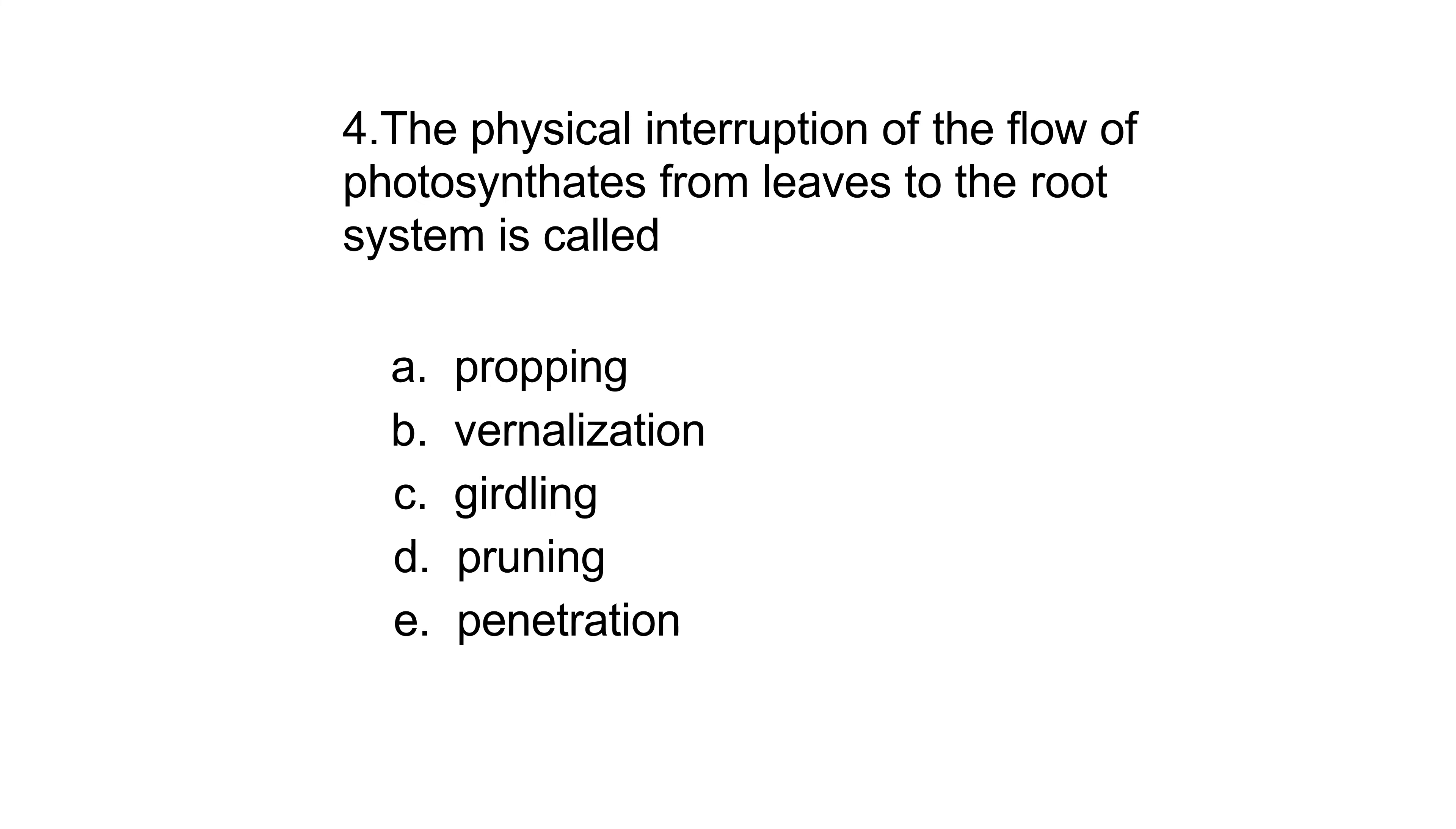Number four: The physical interruption of the flow of photosynthates from leaves to the root system is called propping, vernalization, girdling, pruning, or penetration. The answer is girdling.